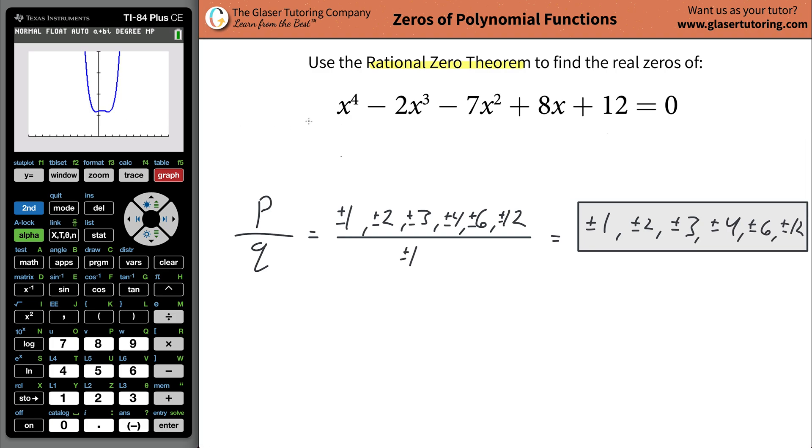So what that means is that none of these values are going to work because these are all possible real zeros. And that's the thing. This theorem just tells you what's possible. Who knows if any of them is going to work. And in this problem, none of them are going to work and go feel free, plug all 12 of them in. Nothing's going to give you a zero. What that means then is that all of the zeros are imaginary. And what that means is that there are no real zeros for this function.